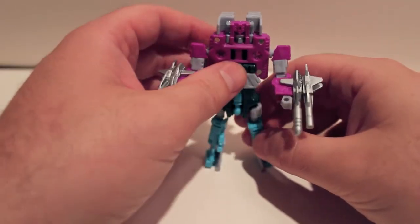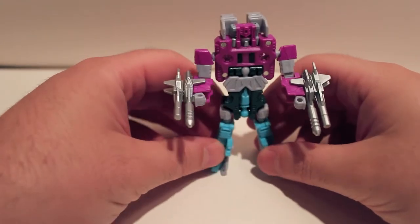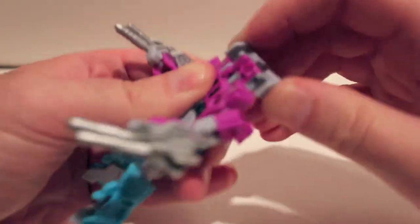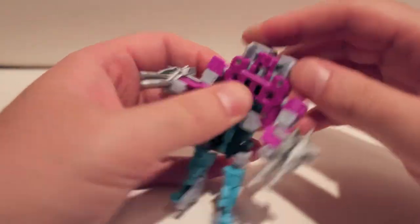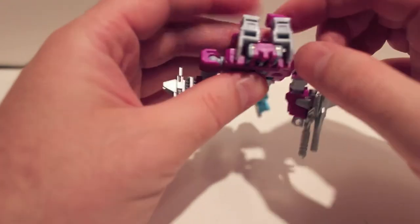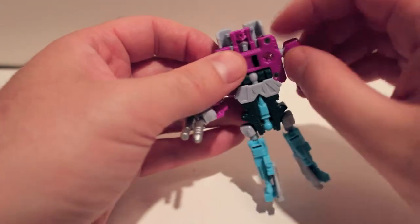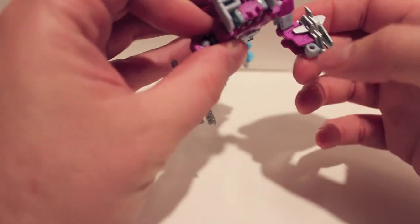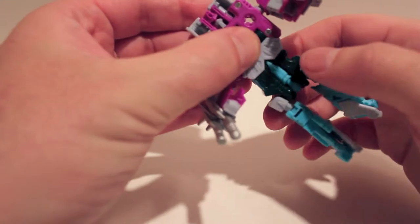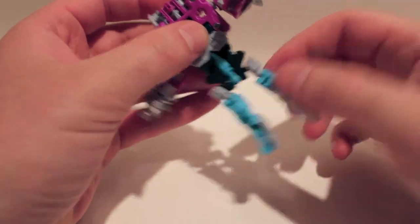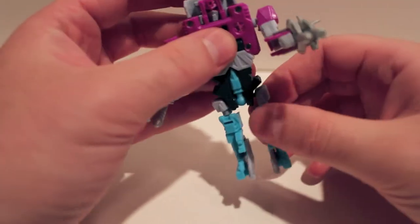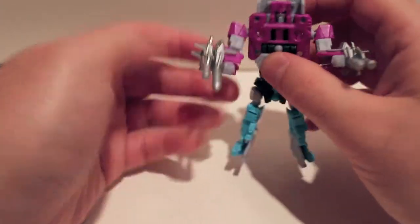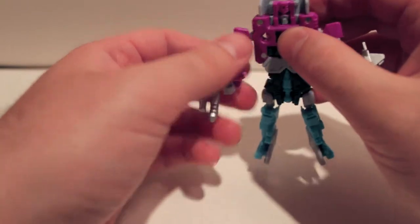Now why am I having trouble posing him? There we go. As far as articulation, head swivels, not that far because of his feet are on the back of his head. Ball jointed shoulders. Bends at the elbow pretty good. And ball jointed wrists. Nothing at the waist because that's the combination port. Ball jointed hips. Ball jointed knees and swivel below the knee. So yeah, he's not bad. He's not a bad little dude.